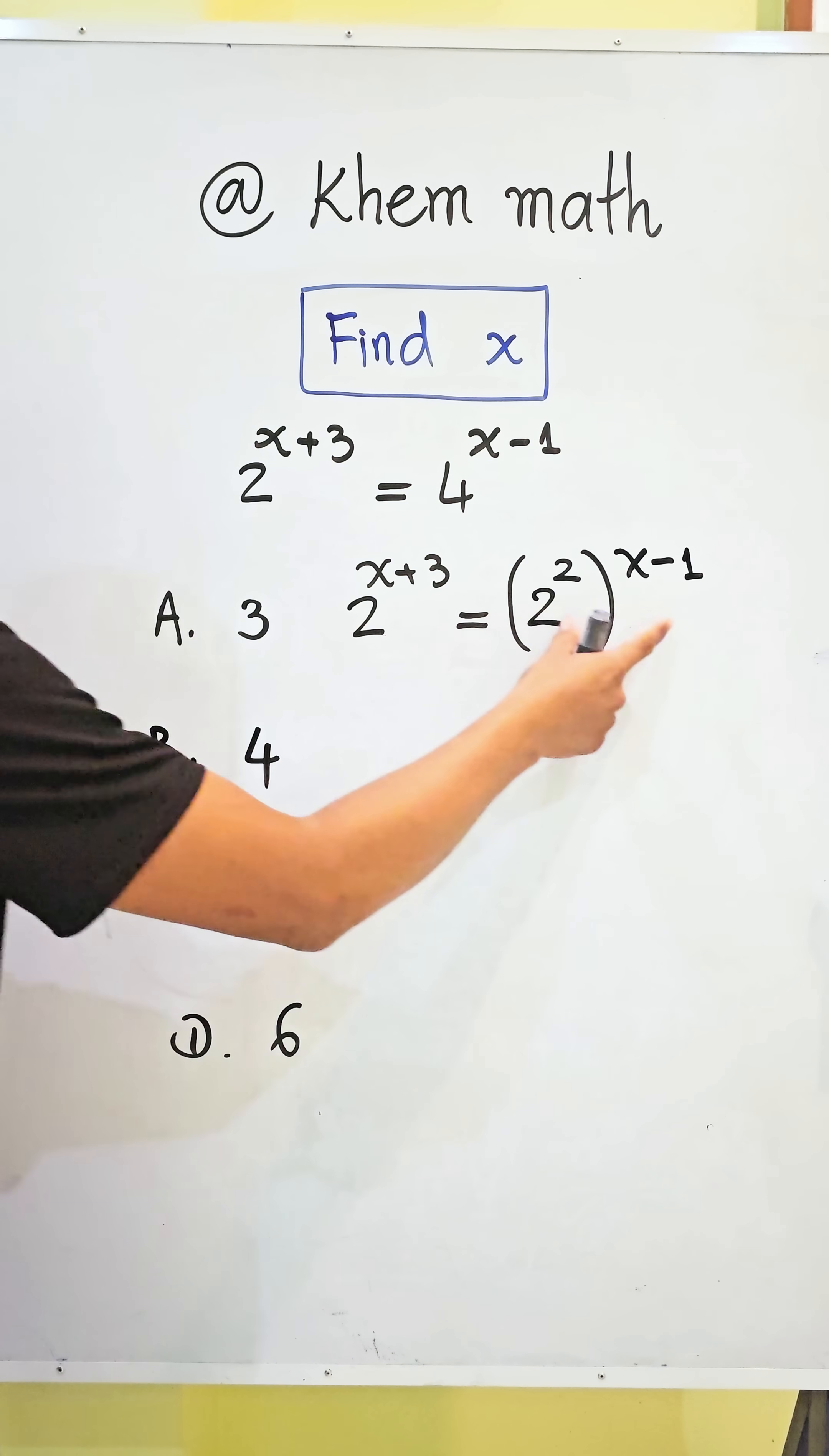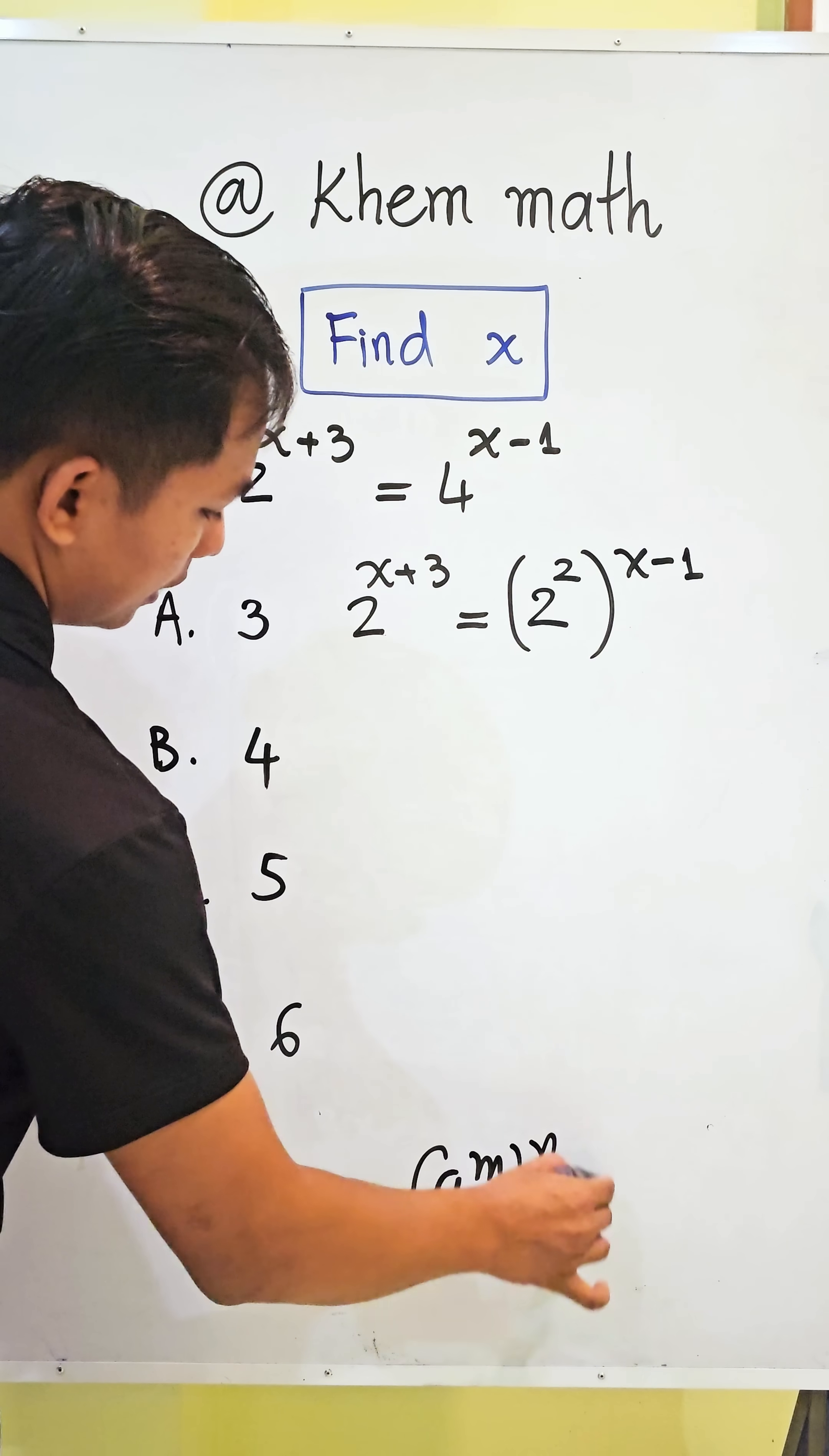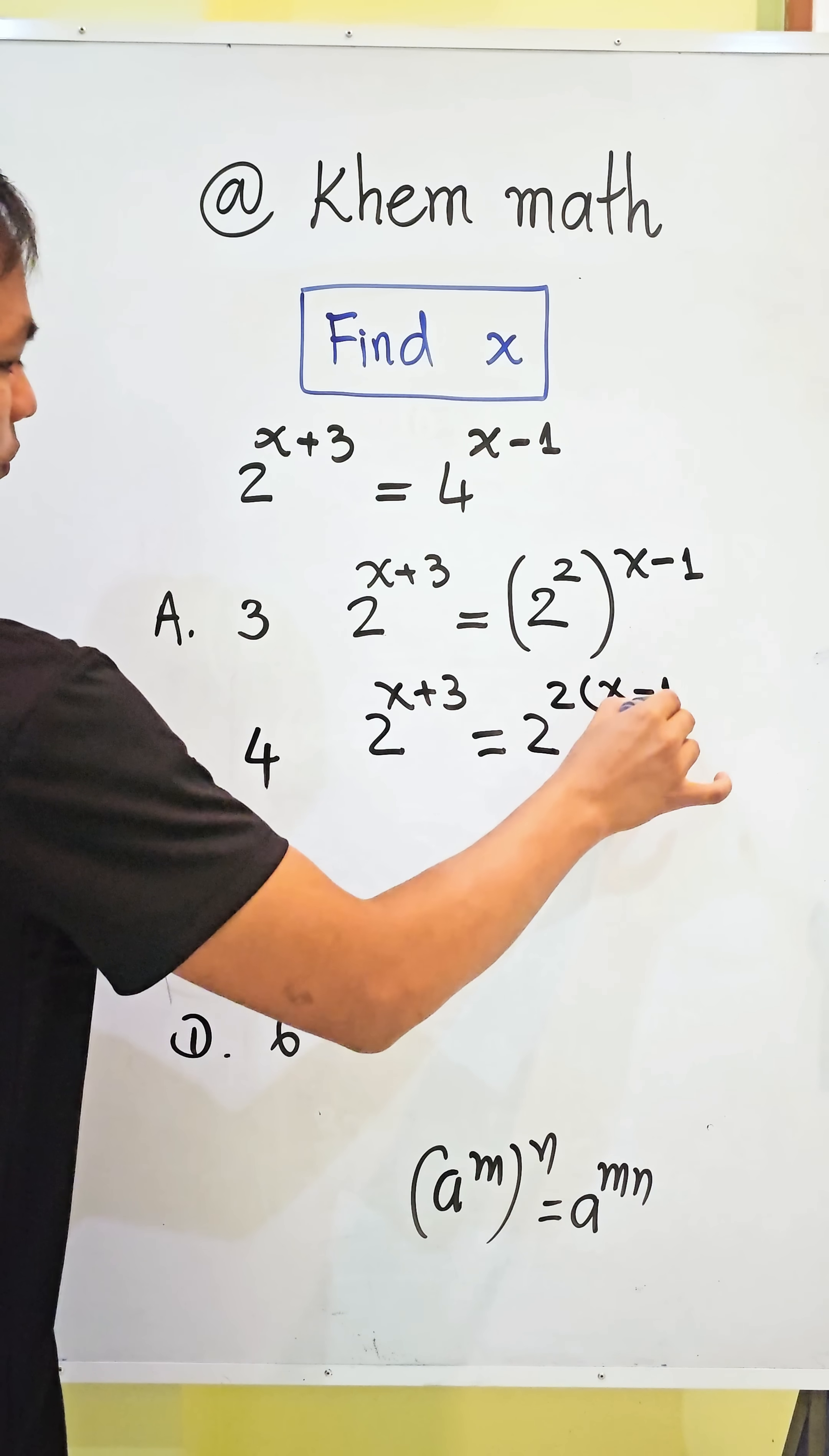And here, we apply the formula: a power m all power n equals a power m times n. So we get 2 power x plus 3 equal to 2 power 2 times x minus 1.